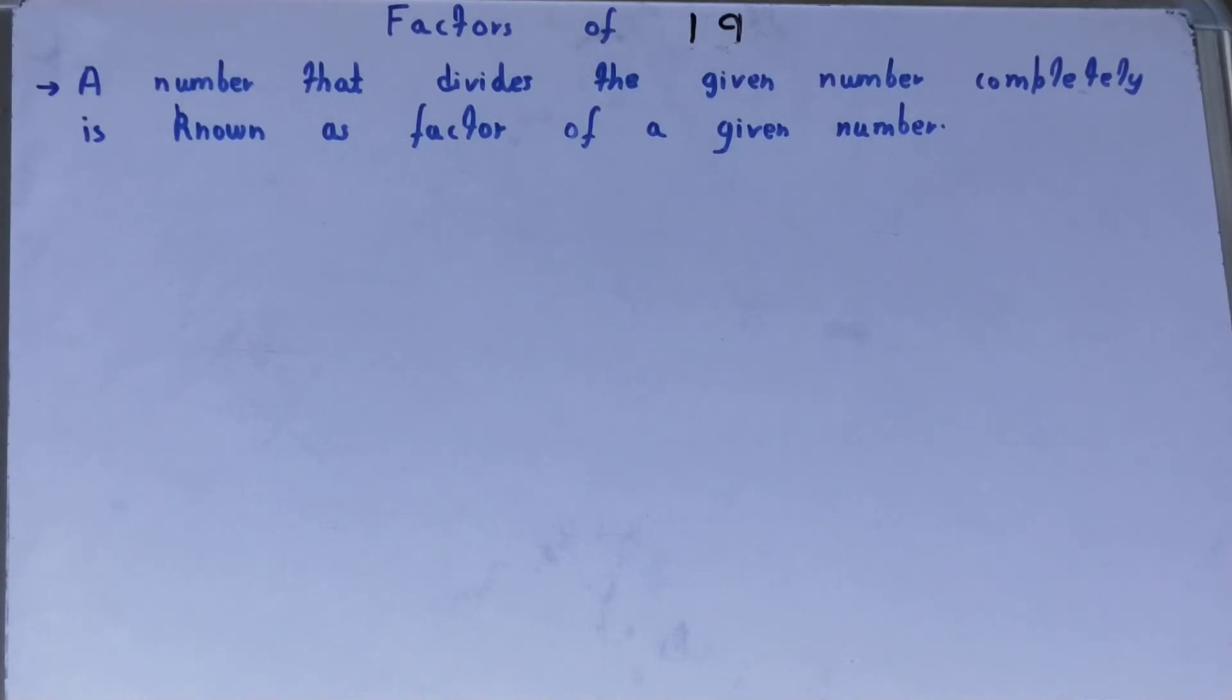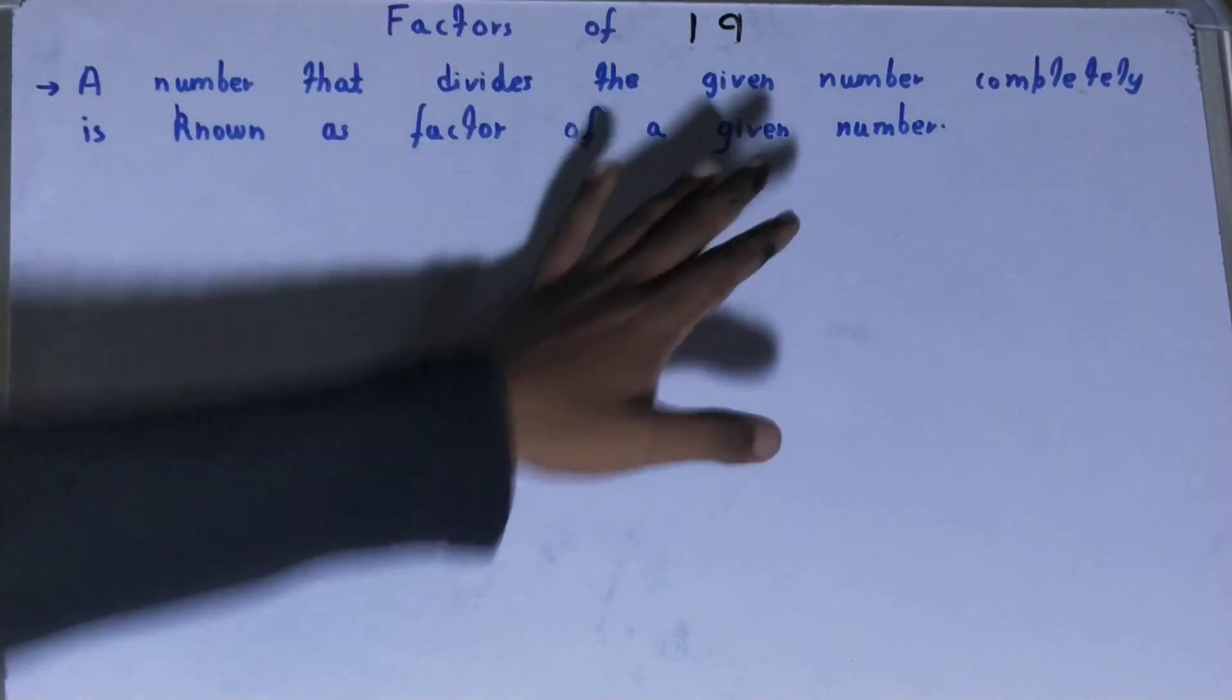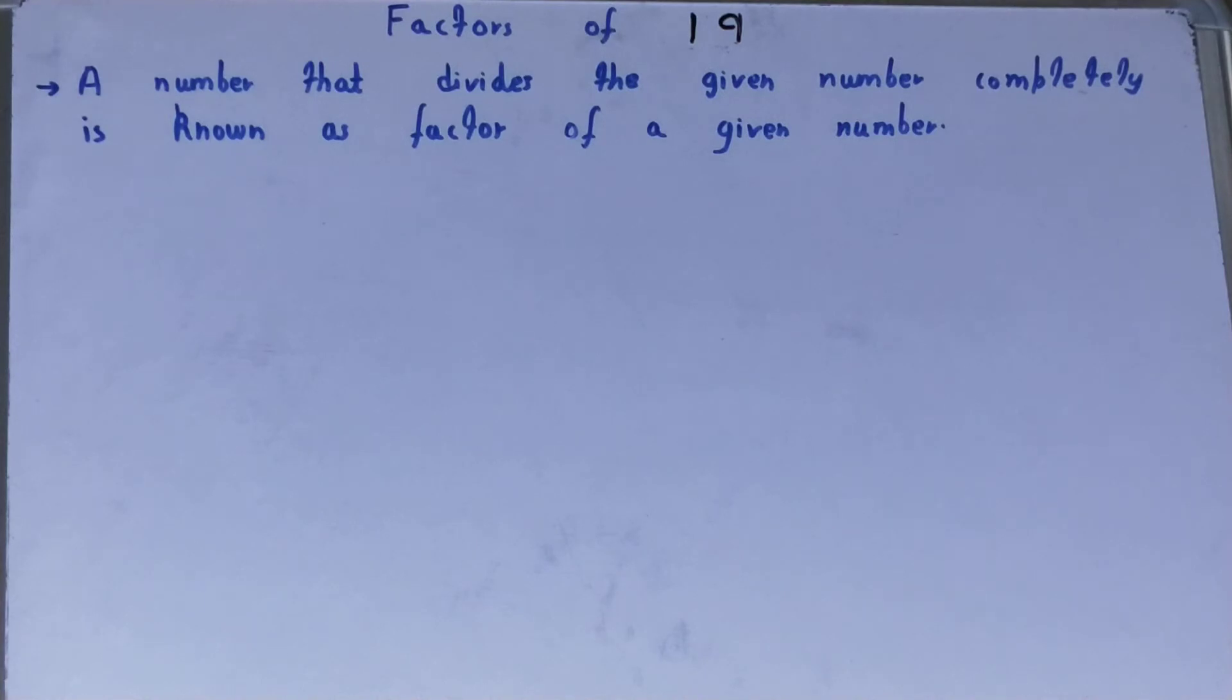A factor is a number that divides the given number completely. Completely basically means getting the remainder as zero. If you get the remainder zero, then you can call that number a factor of the given number. If you did not understand, let me show you with the help of an example.